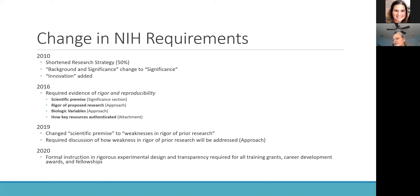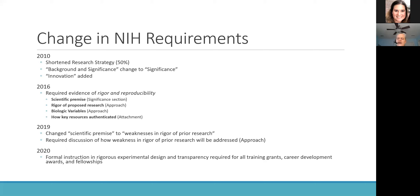By 2019, after we had managed to shorten our grants and learned to incorporate these things between 2016 and 2019, the NIH changed scientific premise to the weakness of the prior rigor in the prior research — shifting the focus in the significance section from the idea of the scientific premise to addressing what the weaknesses were in prior research in terms of rigor. This required a discussion of how those weaknesses were going to be addressed in the current grant application.